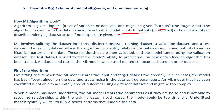Machine learning involves splitting the data set into three distinct subsets: a training data set, a validation data set and a test data set. The training data set is used to identify the relationships between inputs and outputs based on historical patterns of the data. These relationships are then validated using a validation data set, and the model is tuned. The test data set is used to test the model's ability to predict. Once an algorithm has been trained, validated and tested, the model can be used to predict outcomes based on other data sets.